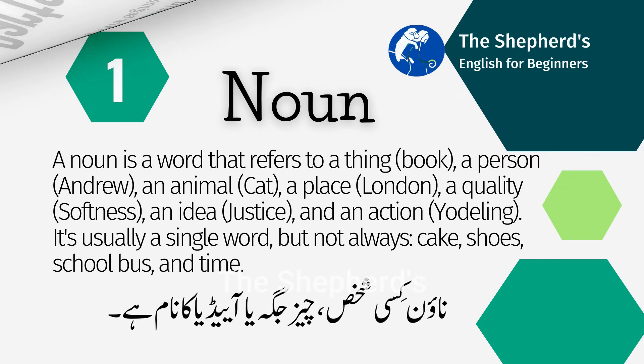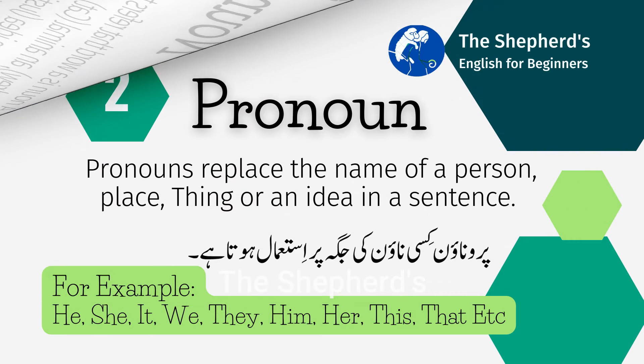Number 1. Noun. A noun is a word that refers to a thing, a person, an animal, an idea, and an action. For example: Book, Andrew, Cat, Justice, Yodeling, or Dancing. It is usually a single word, but not always. For example: Kate, Shoes, School Bus, and Time.